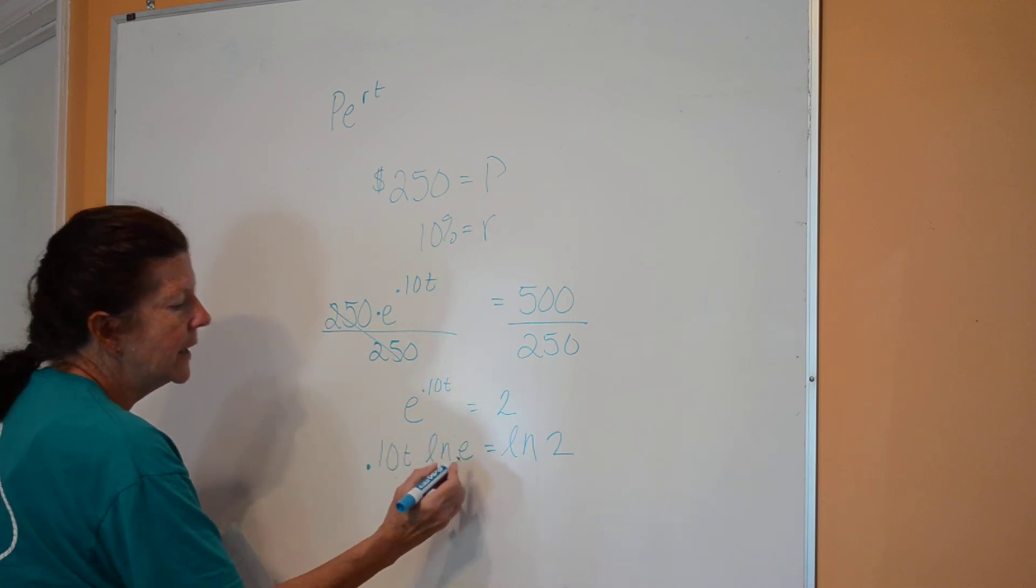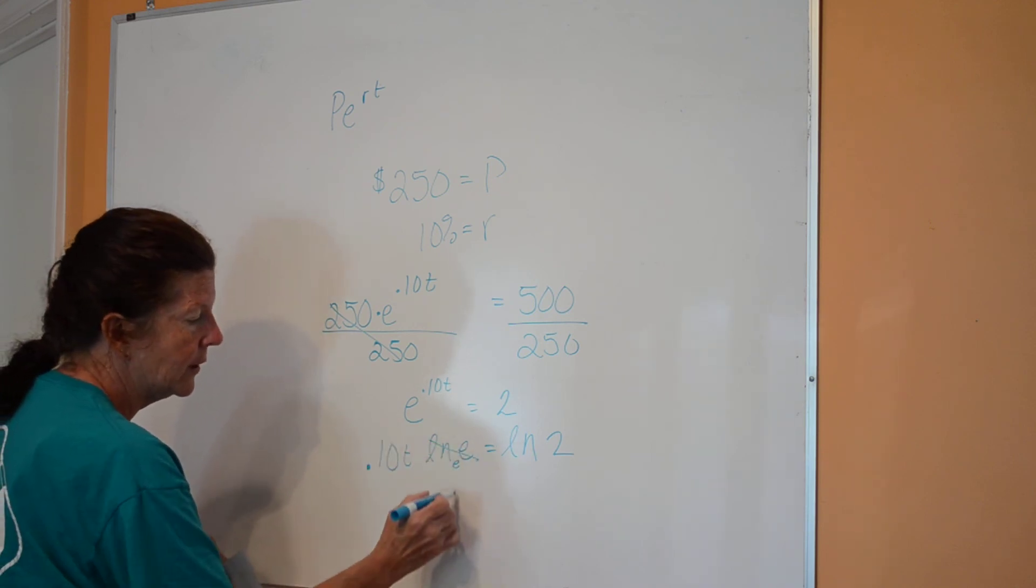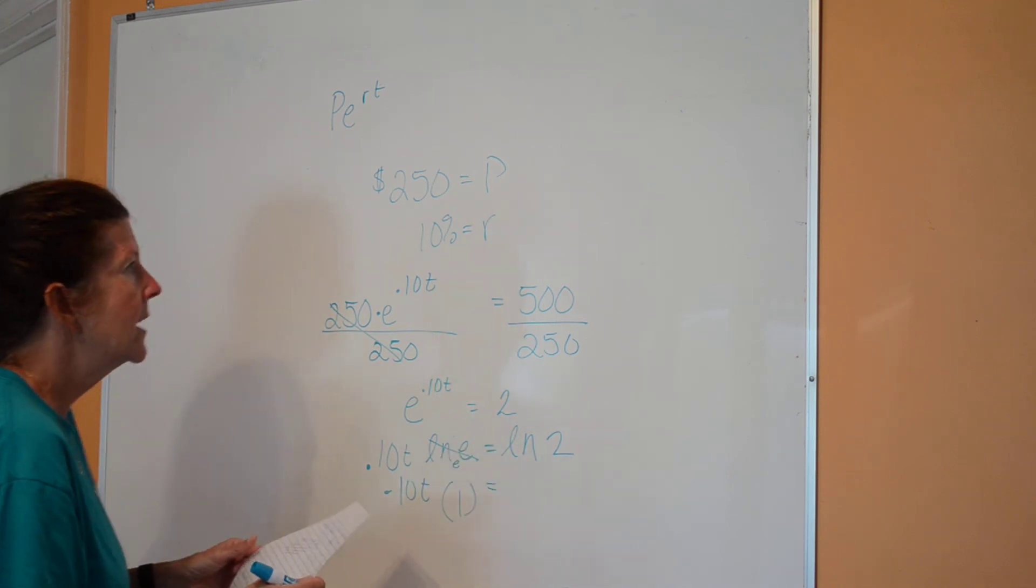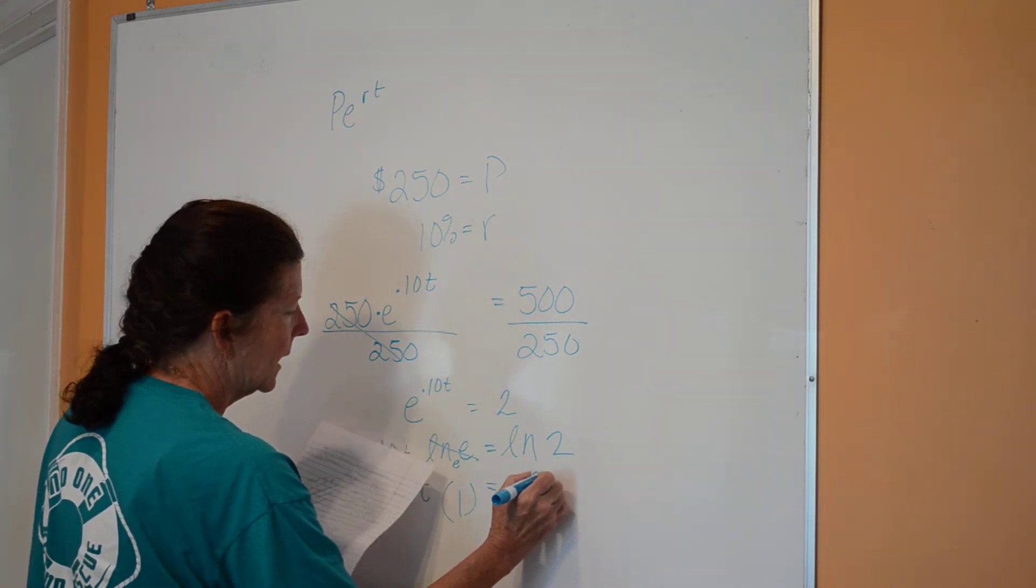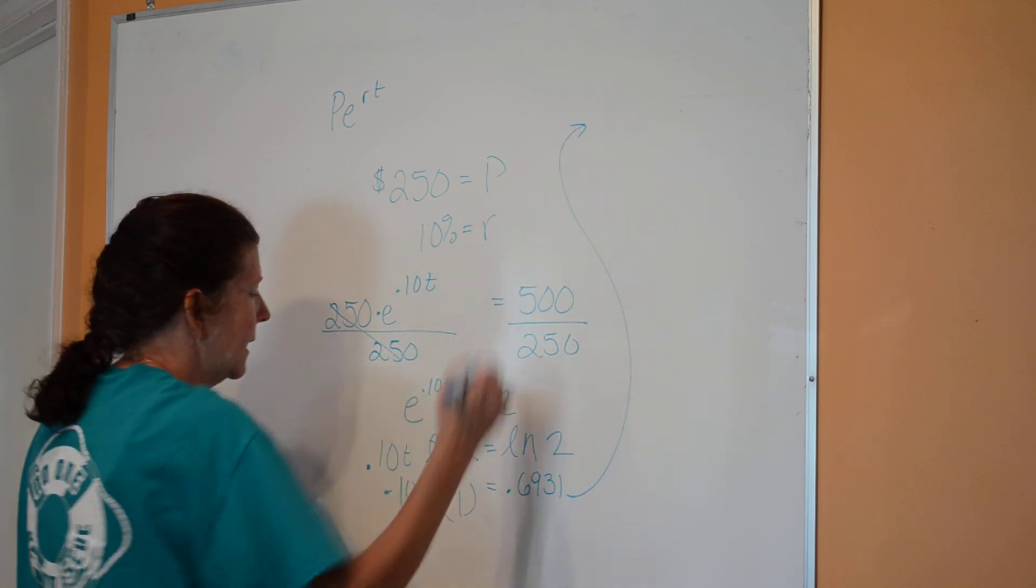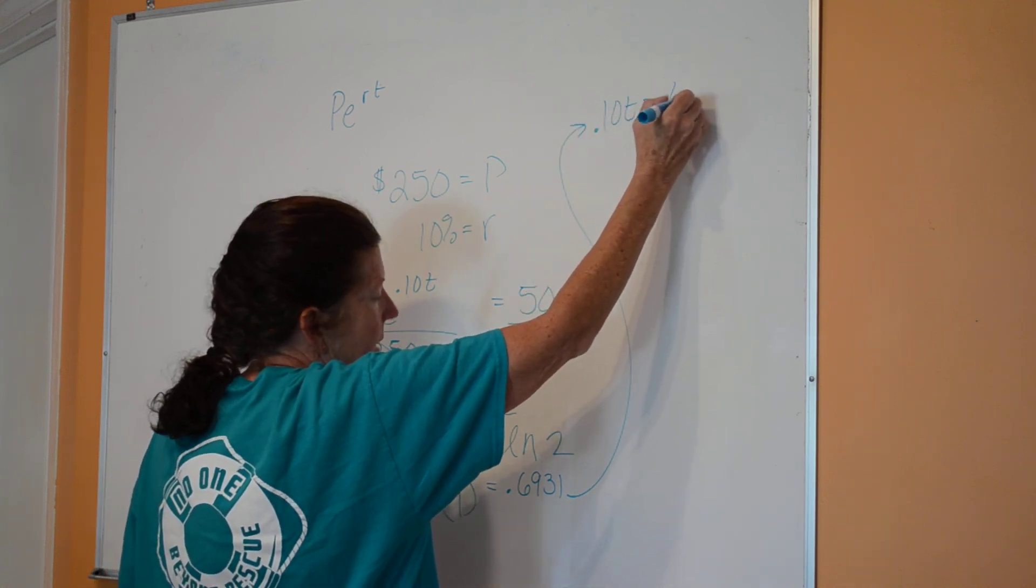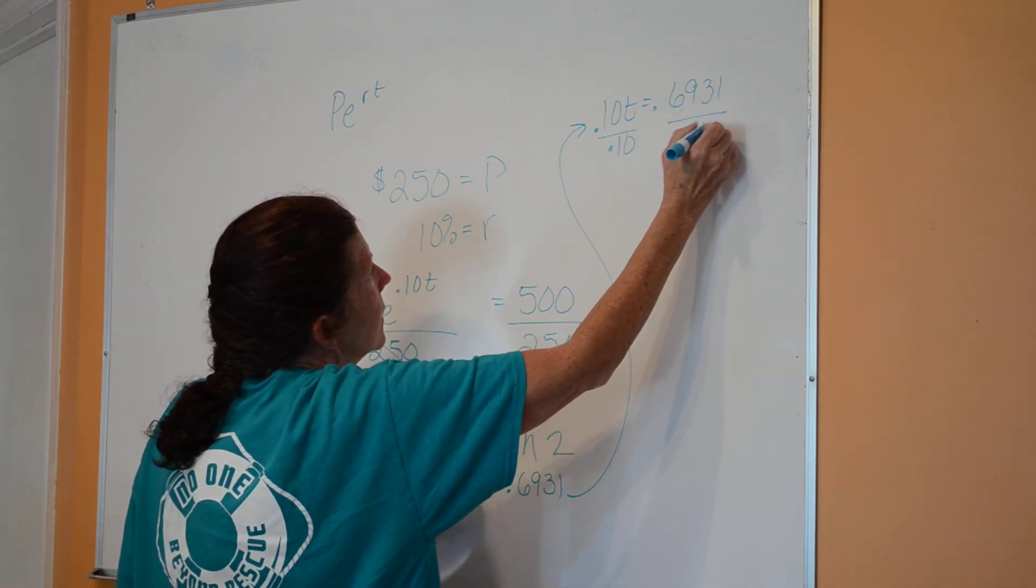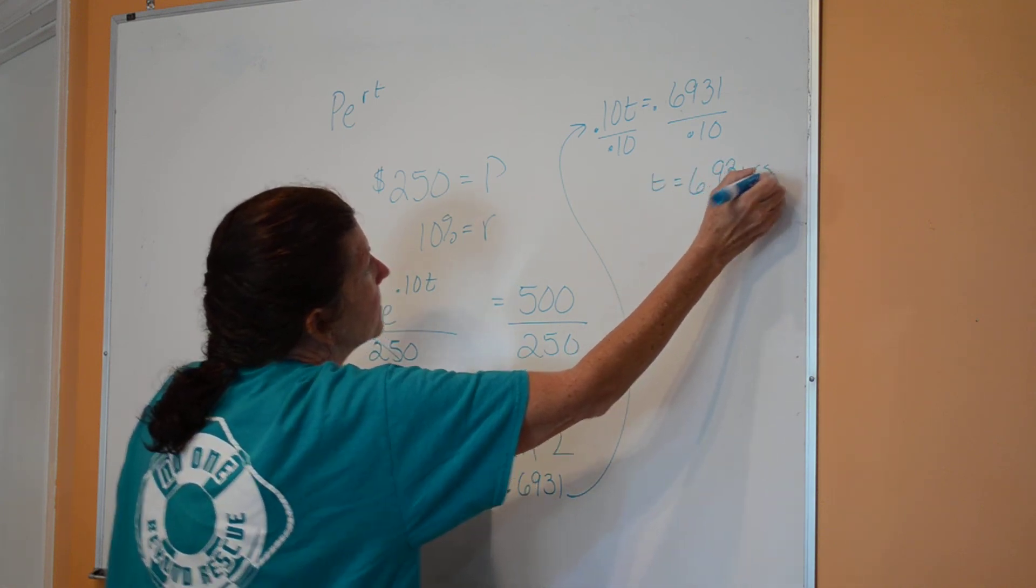Now, the natural log of e is the same thing as the natural log of base e of e, so that's one. This whole thing right there is equal to one. So I have 1 times 0.10 T is equal to, and then natural log of 2 is equal to 0.6931. So I've got 0.10 T is equal to 0.6931. I'm going to divide by 0.1, and I'm going to get T is equal to 6.93 years.